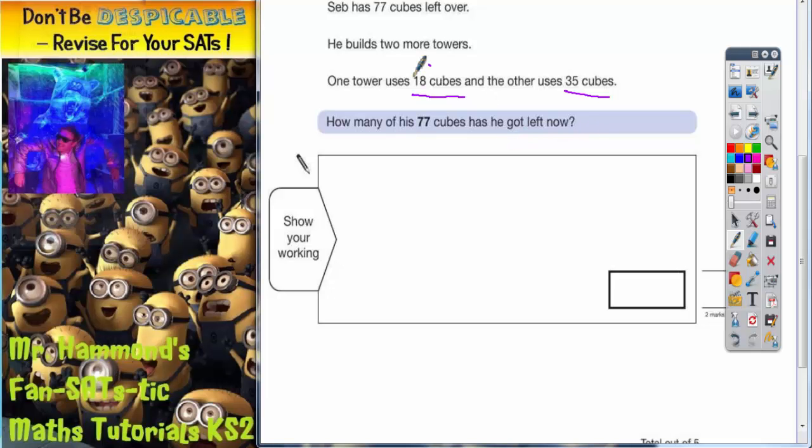Well, the best thing to do here is add these two together and then subtract it from the 77. So if you use 18 cubes and then another 35 cubes, how many cubes are you using? 8 plus 5 is 13. Put the 3 in, carry the 1. 1 plus 3 is 4 plus that 1 is 5.